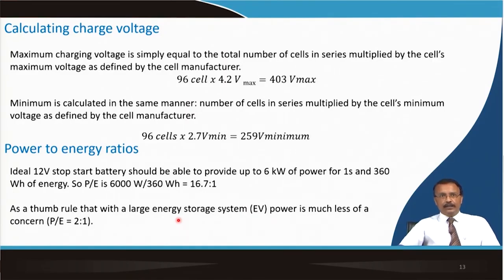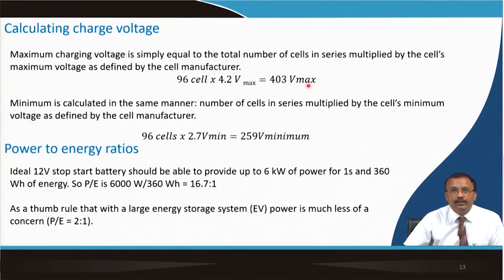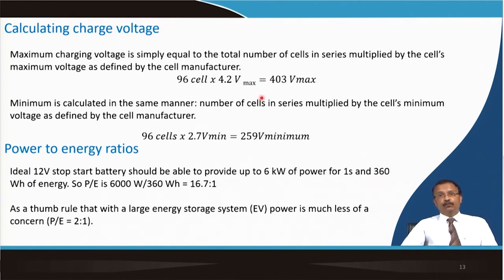Charge voltage can also be calculated: maximum charging voltage equals the total number of cells in series multiplied by the cell's maximum voltage as defined by the manufacturer. For 96 cells × 4.2 V max = 403 V maximum. Minimum voltage is calculated the same way: number of cells × minimum cell voltage = 259 V minimum.